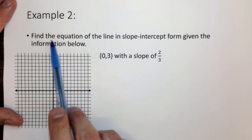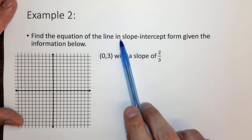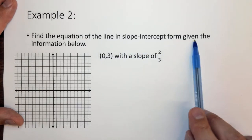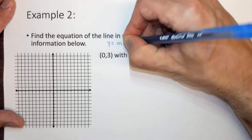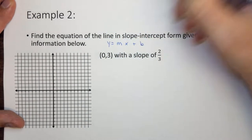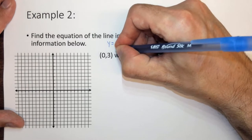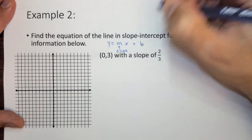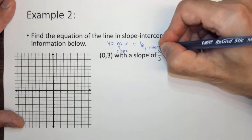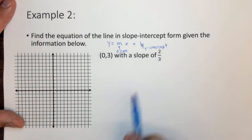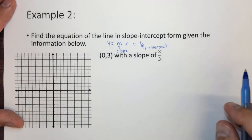Here it says find the equation of a line in the slope-intercept form given the information below. Well the slope-intercept form is y equals mx plus b, where m is the slope, and b is the y-intercept. This is the equation of a line. Y and x are just the individual values and usually are variables in these equations.